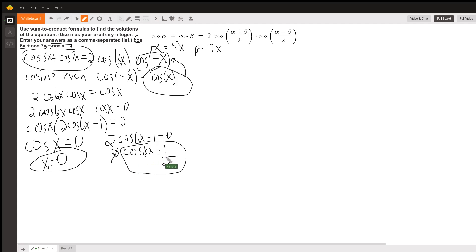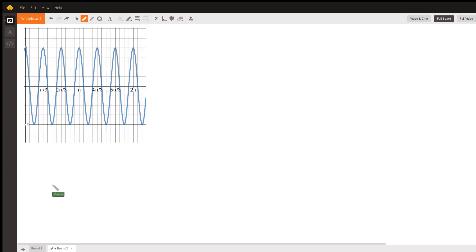So we are looking for x's that cause the cosine to equal half. Now, instead of letting this just be a calculations thing, I think it helps to see a picture. So come with me to board 2.